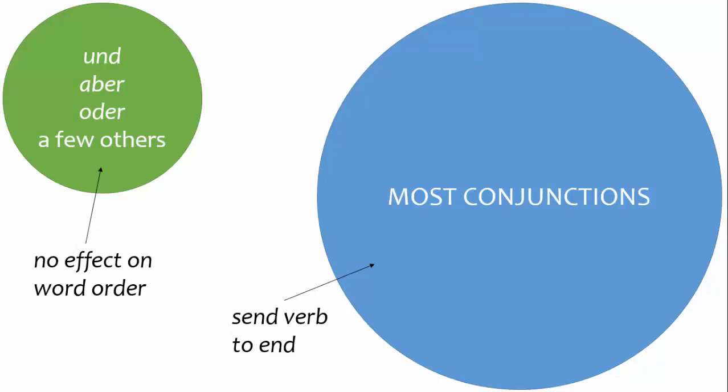One more note. Most conjunctions are subordinating conjunctions. So, when you use a conjunction, if in doubt, move the verb to the end of the clause.